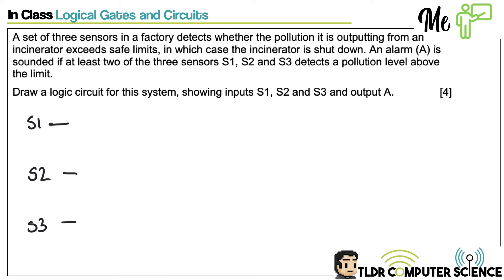Now remember guys, we haven't got an infinite number of building blocks. We have NOT gates, exclusive OR gates, OR gates, and AND gates. So it's not like an infinite number of things to pick from. We can probably work backwards. So it says in here a set of three sensors detects whether the pollution is outputting from an incinerator exceeds safe limits. In which case the incinerator shut down. An alarm A, which is our output, sounds if at least two of the three sensors. If there's one sensor, it's just a small amount of pollution. So we need - if S1 and S2 is going off, it triggers. S1 S3 it goes off. S2 S3 it goes off. If it's S1 and S2 and S3 goes off. If just S1 and the rest are off, then it's off. I think I could express that simpler.